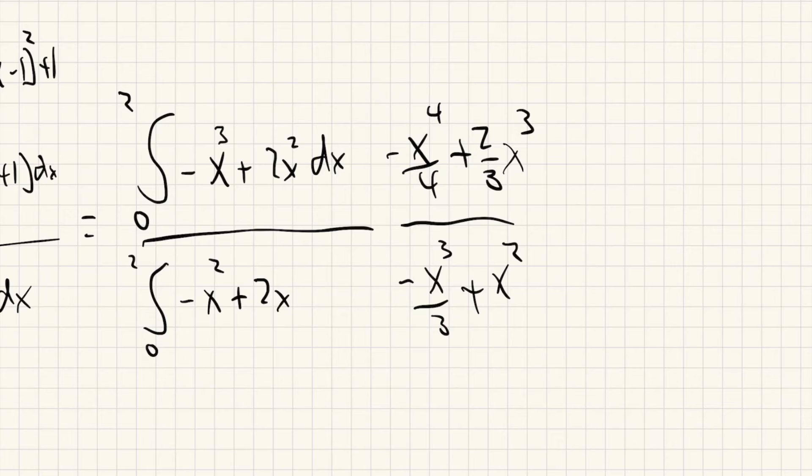So since this is 0 and there's no constants in this, we can just ignore it. So the answer is just going to be -2⁴/4 + (2/3)·2³ divided by -2³/3 + 2².